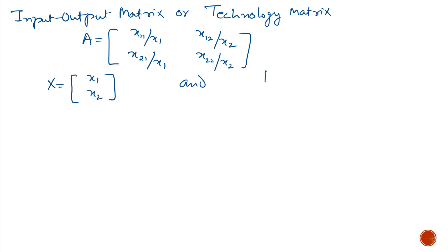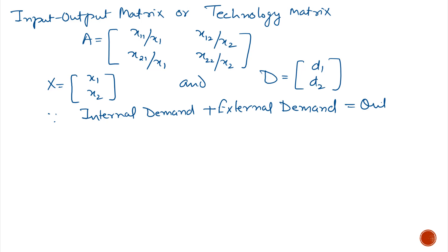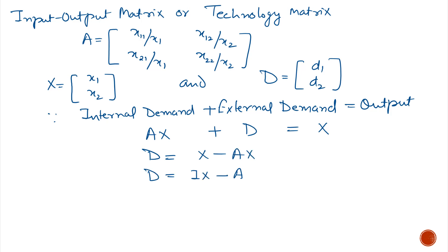Let the output be X1, X2 and the final demand be D1 and D2. We know that internal demand plus external demand equals output. Internal demand is A times X, and external demand is D, which equals X. So D equals X minus AX. After simplifying, we get X equals (I minus A) inverse times D. Using this formula we can calculate the output for the forecast demand.